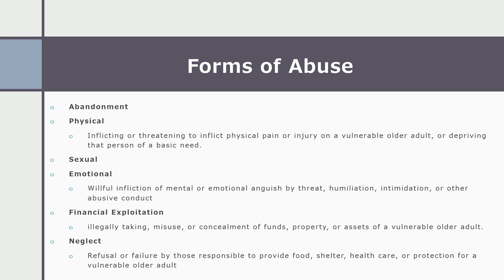Now I'm going to talk about the six forms of abuse we see in elder abuse. These will look familiar because many we covered with child abuse, just applied to persons 60 to 65 and older. The first form is abandonment — the intentional and permanent desertion of an older adult in any place, such as a hospital, nursing home, or shopping center, or leaving the person without the means to obtain necessary food, clothing, shelter, healthcare, or financial support. Then there is physical abuse — inflicting or threatening to inflict physical pain or injury on a vulnerable older adult, or depriving them of basic needs.